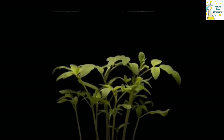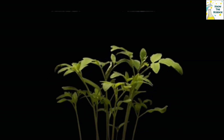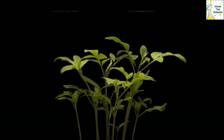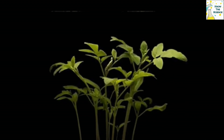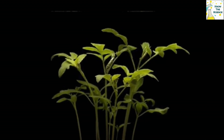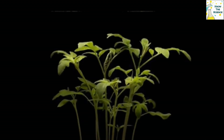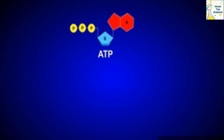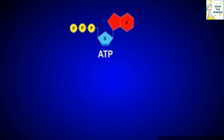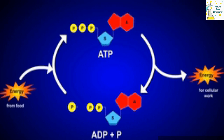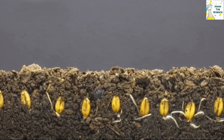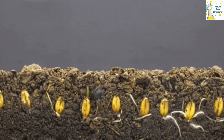Phosphorus is an essential nutrient for animals and plants. It plays a critical role in cell development and is a key component of molecules that store energy, such as ATP (adenosine triphosphate), DNA, and lipids (fats and oils).